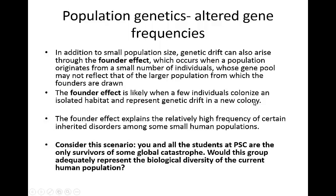For example, individuals got onto a boat, went to an island, decided not to leave, and were the only ones there reproducing. If you started out with just 10 people, those are the only genetic backgrounds you have to reproduce with. This founder effect explains the relatively high frequency of certain inherited disorders among some small human populations — isolated groups with a lot of interbreeding that started from just a small number of individuals are much more likely to have these genetic disorders.